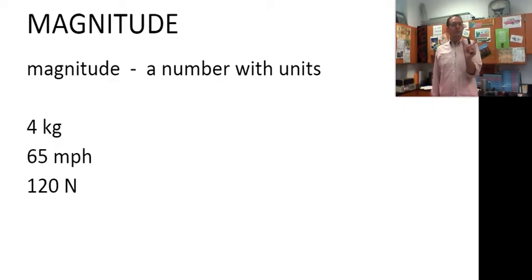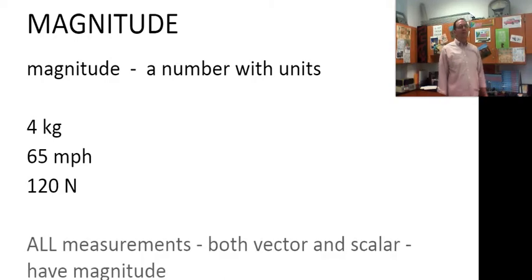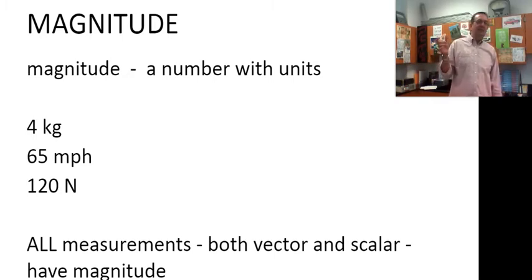120 newtons down. Well, the 120 newtons part is the magnitude of the force. It's the part, the number with units without the direction. All of these measurements, vectors and scalars, all of them have magnitude, but only the vectors have a direction.